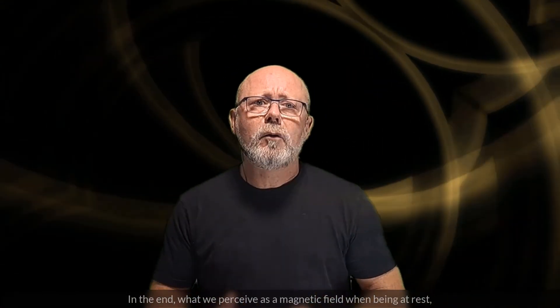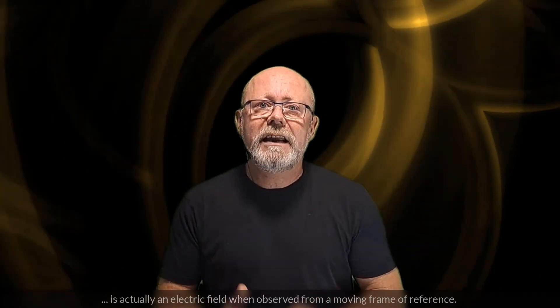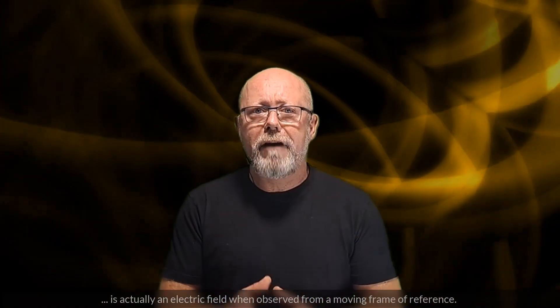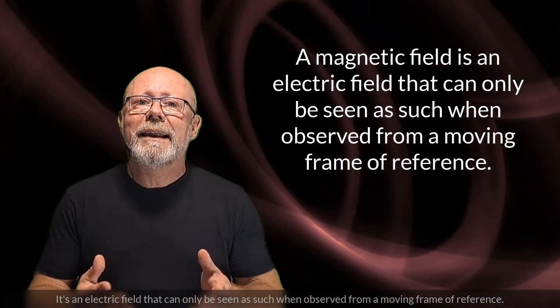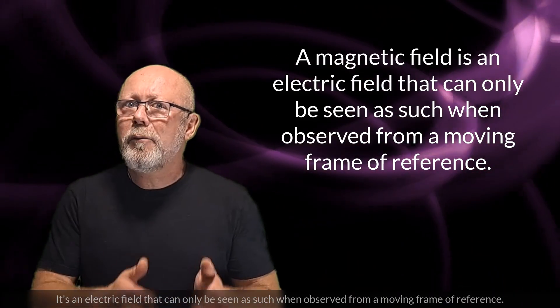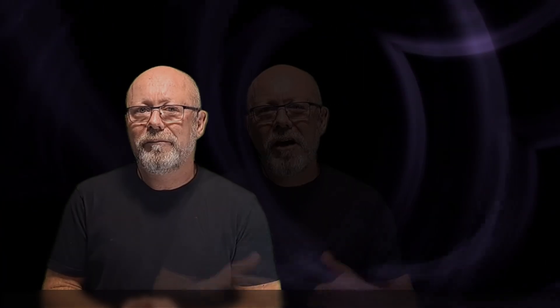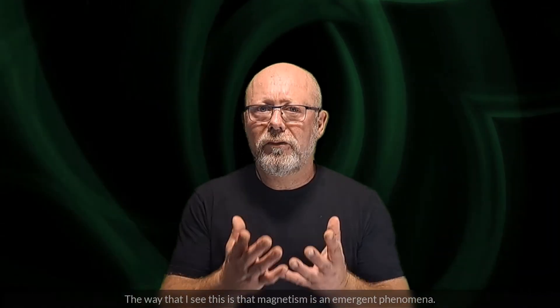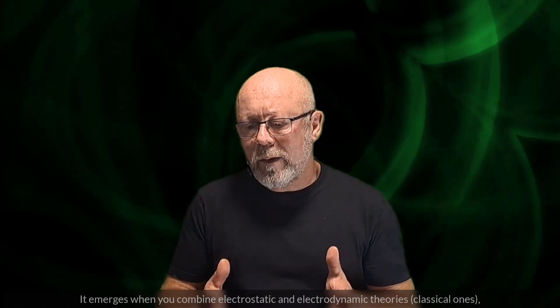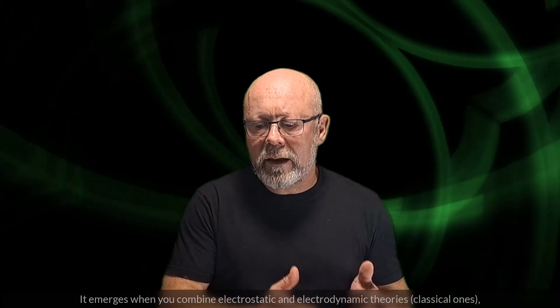In the end, what we perceive as a magnetic field when being at rest is actually an electric field when observed from a moving frame of reference. That's what a magnetic field is! It's an electric field that can only be seen as such when observed from a moving frame of reference. The way that I see this is that magnetism is an emergent phenomenon. It emerges when you combine electrostatic and electrodynamic theories, classical ones, with special relativity.